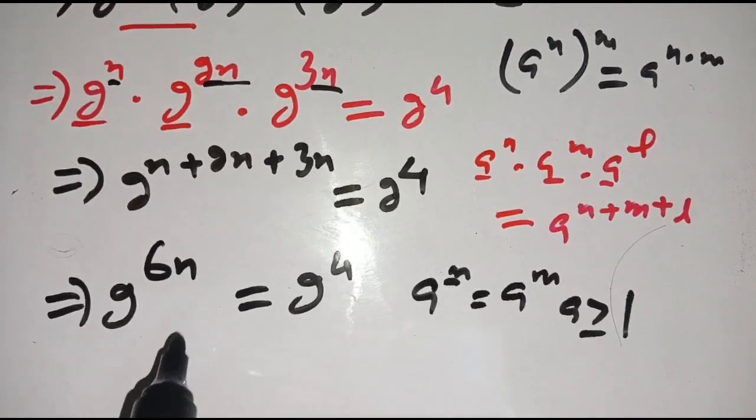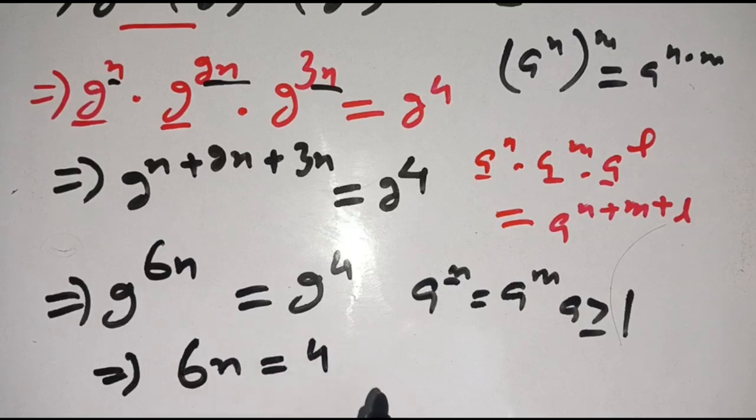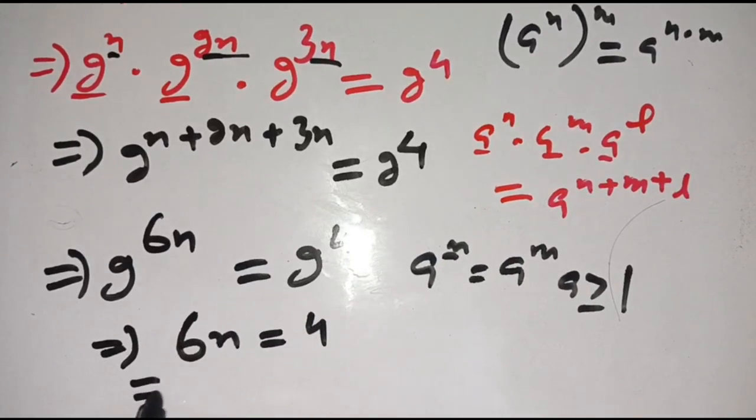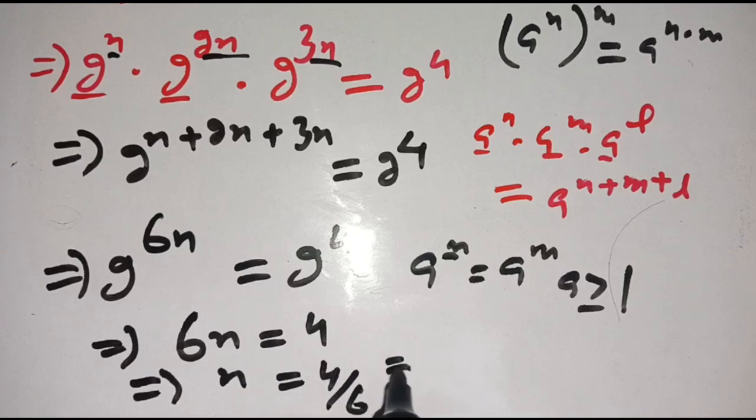On dividing both sides by 6, we get n is equal to 4 divided by 6, which is equal to 2 divided by 3. This is the value of n which satisfies our exponential equation.